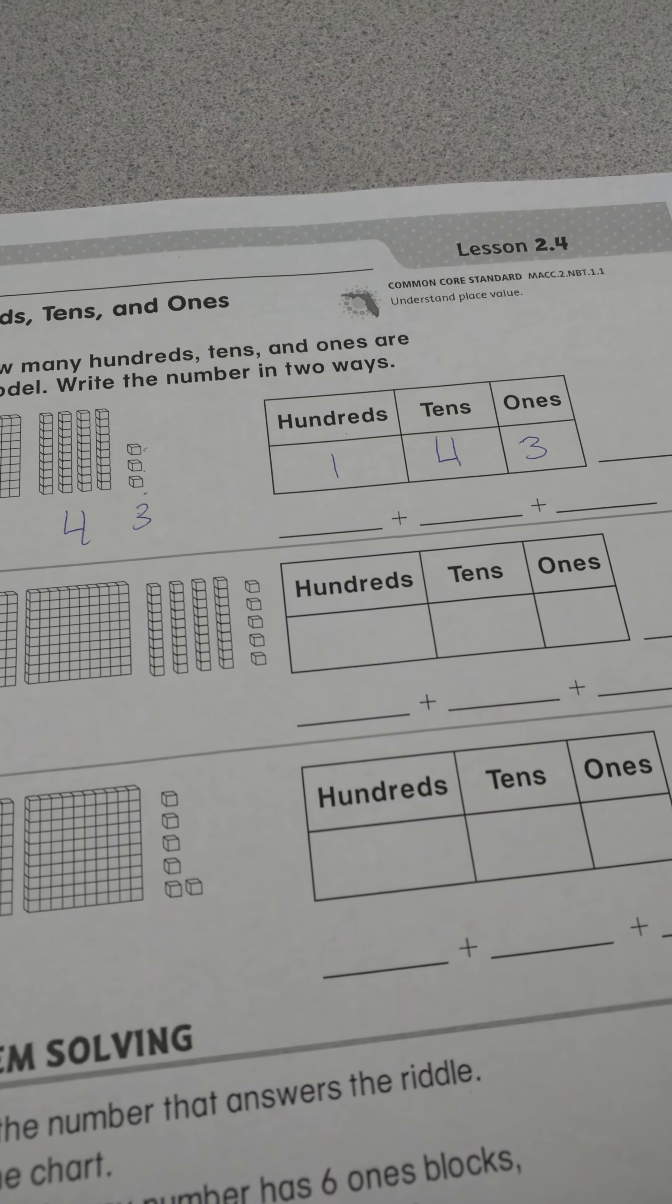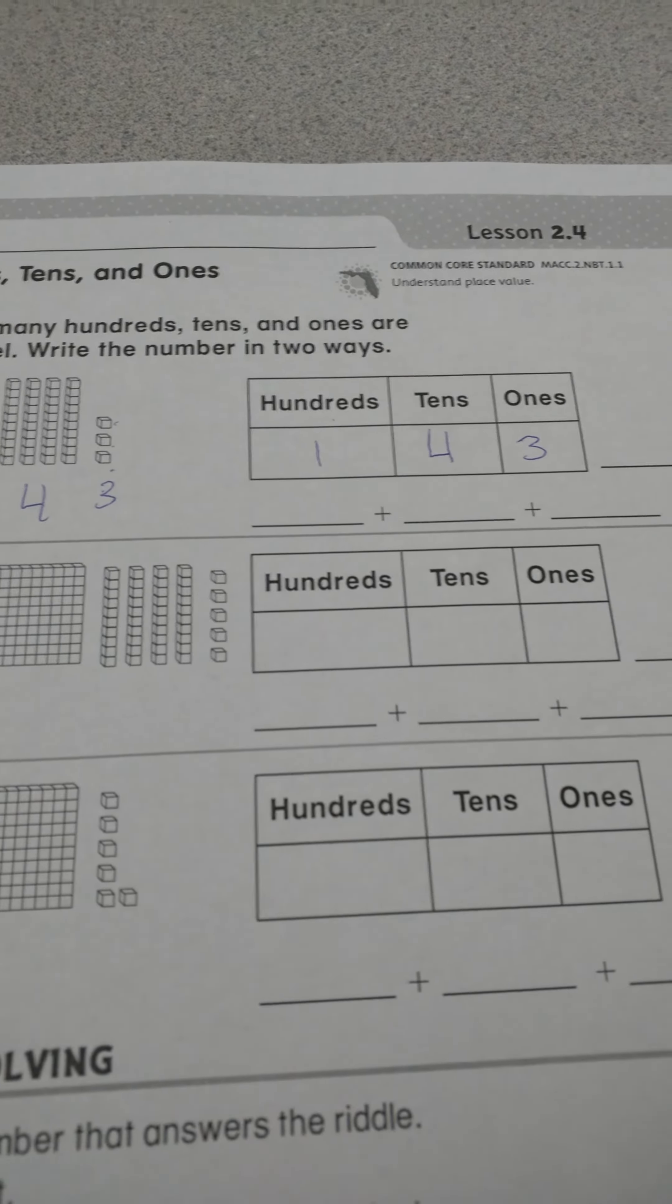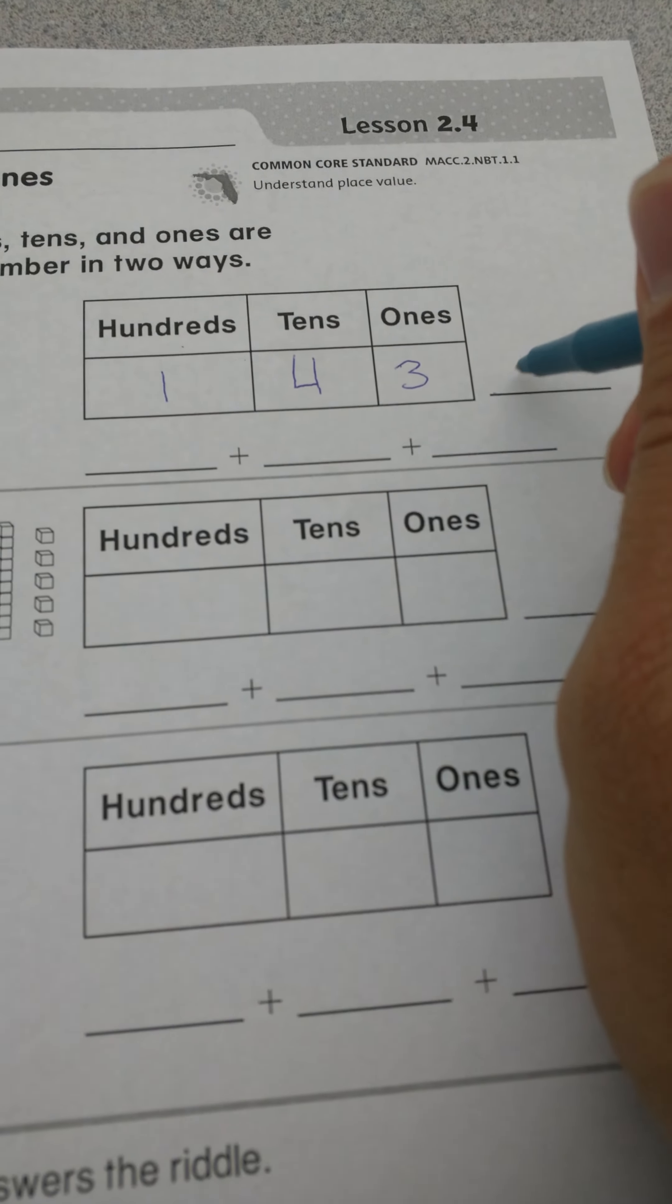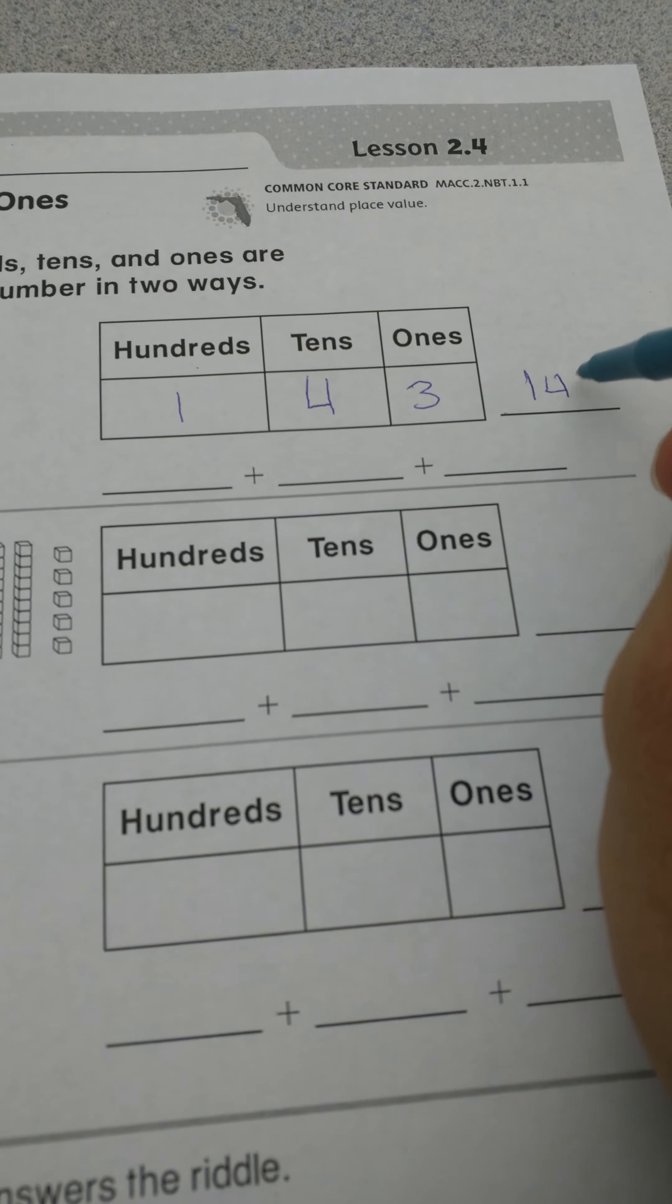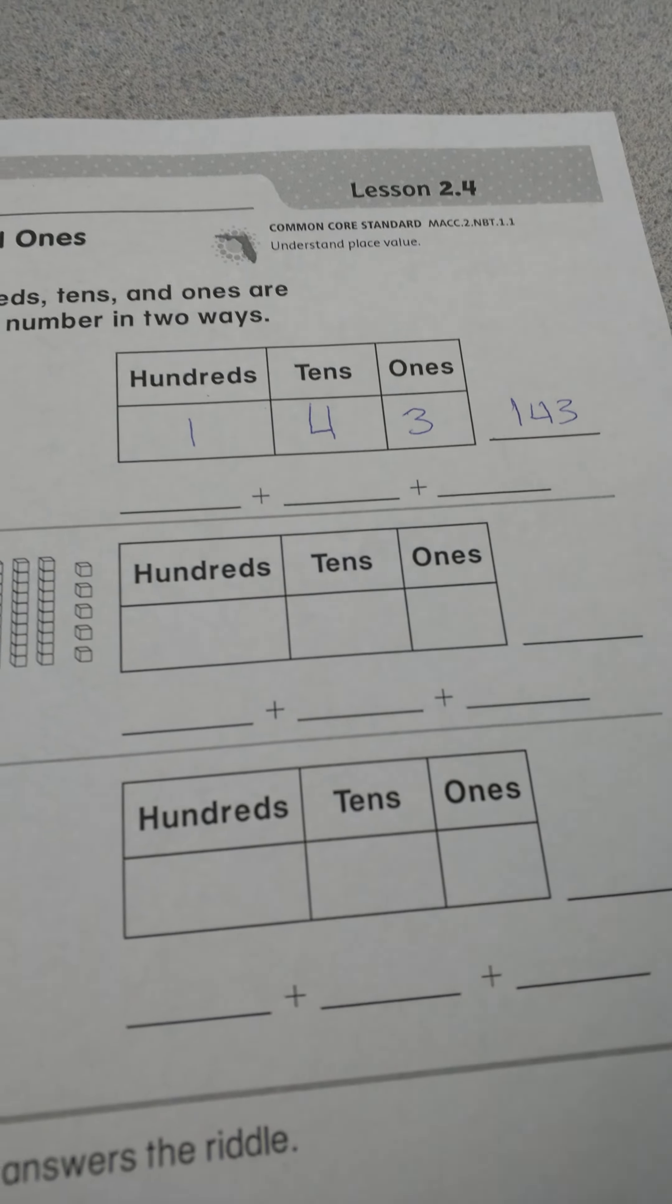So we talked about, and before we move on to the next part, you basically just write this number out, without the place values there, and just write 143 as your number.